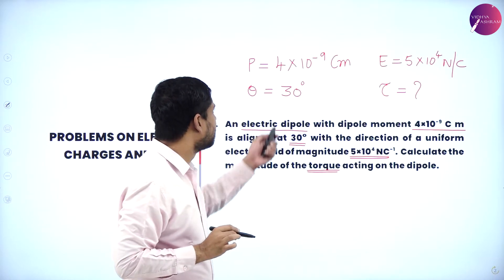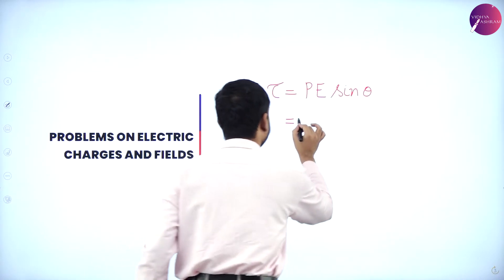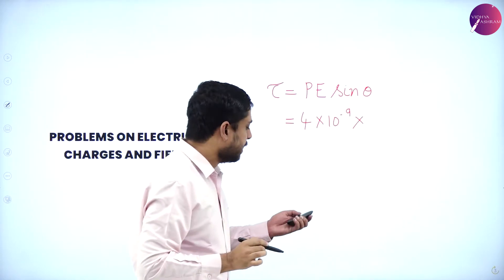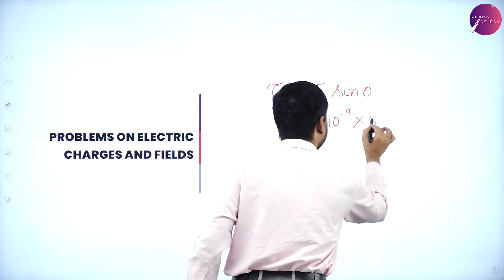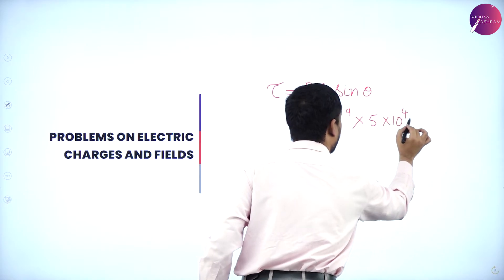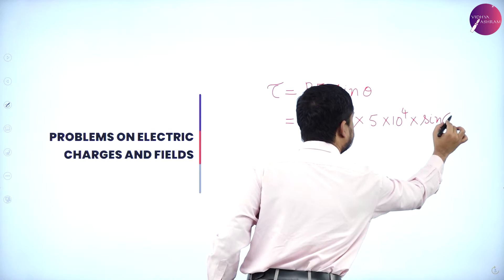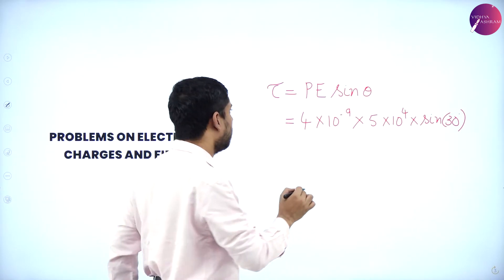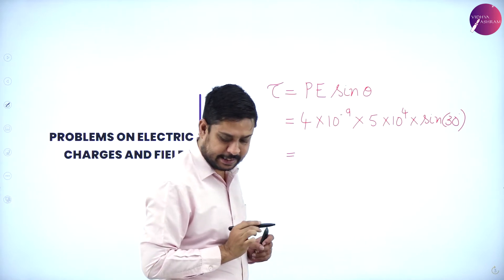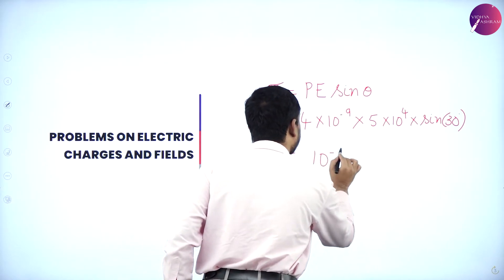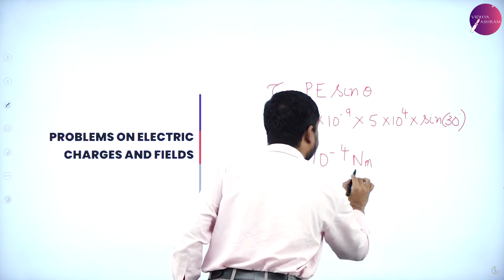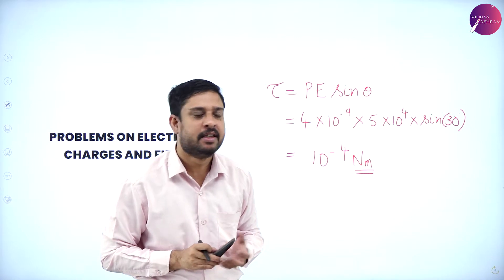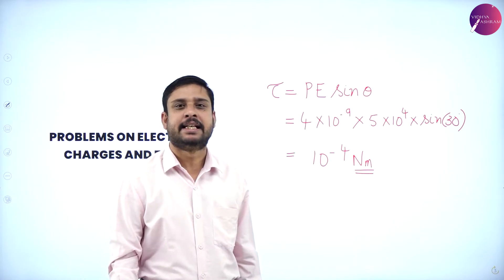Now P is 4 into 10 power minus 9, strength of the electric field 5 into 10 power 4 into sine 30, where sine 30 is half. On simplification this turns out to be 10 to the power minus 4 newton meter, the SI unit for torque. Very simple, just know the expression, substitution and calculation takes no time.